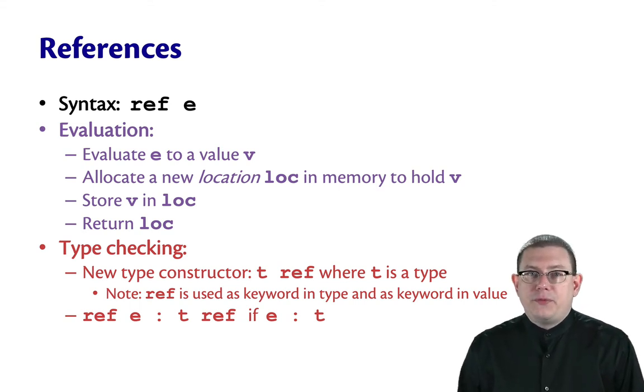T ref is a type for any T. So you could have an int ref, a string ref, a reference to a variant type, whatever you like. Ref e has type T ref if e has type T.